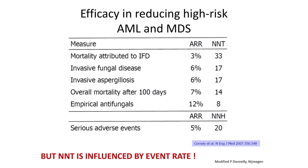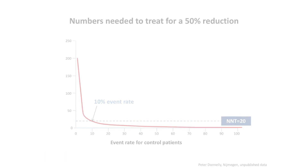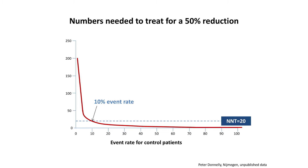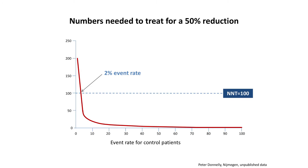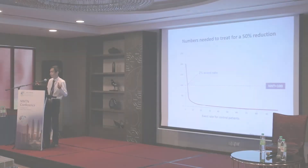The Corneli and Ullman papers made a very strong case for prophylaxis, where in the context of their institutions the number needed to treat was actually 20. But the NNT is so dependent on event rate. If you have a 10% rate of IFD in your immunosuppressed cohort, NNT may be 20. But if you only have 2% of your AML and allogeneic SCT patients going on to have IFDs, then your NNT actually goes up to 100. So if you are prophylaxing 100 patients just to achieve a reduction of event rate of 2%, it may not be worth the cost.